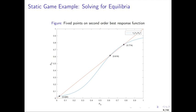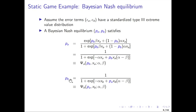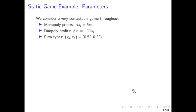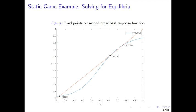We can try successive approximations — substituting one best response equation into the next to get a second-order best response function. Substituting firm B's best response function, which is a function of firm A's investment probability, into firm A's best response function gives a mapping from P_A to P_A. You just need to find the fixed point of that equation.